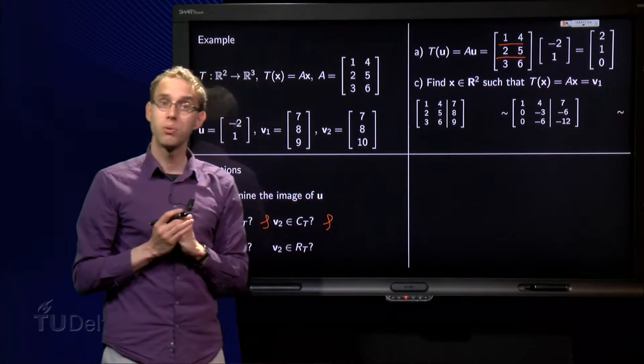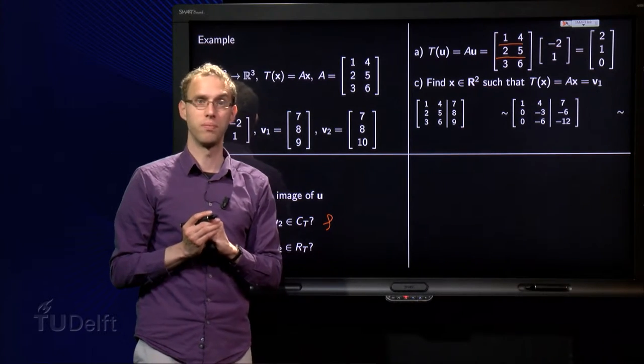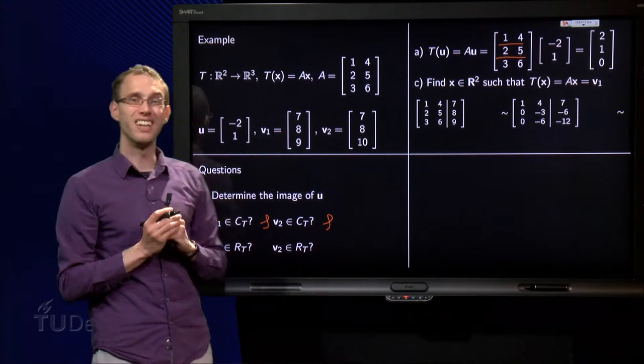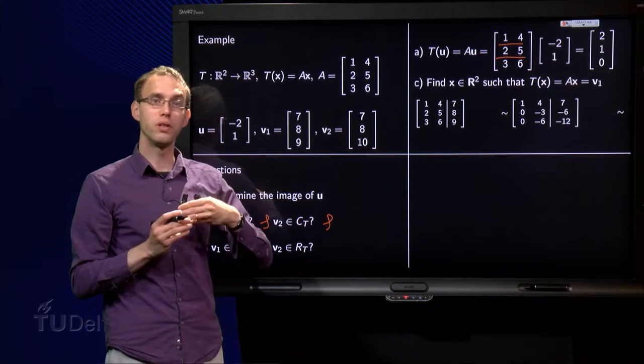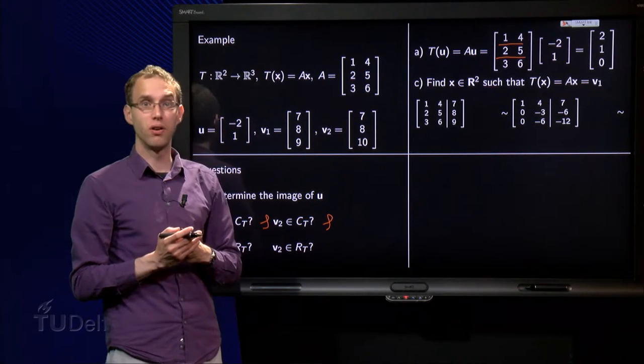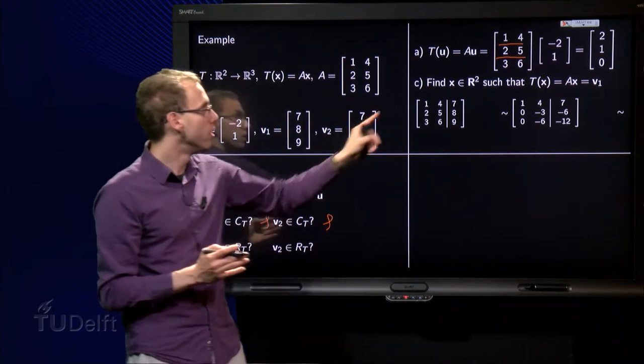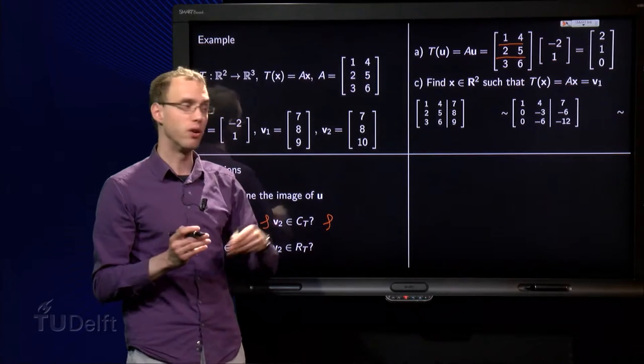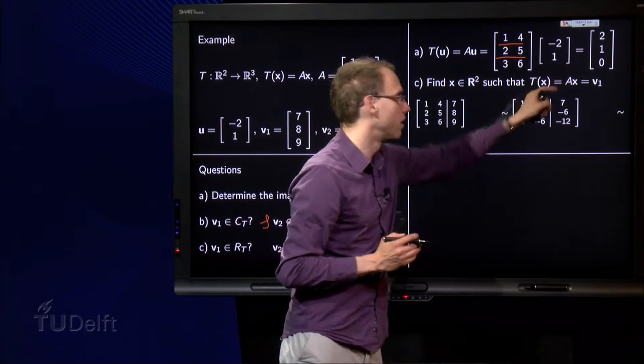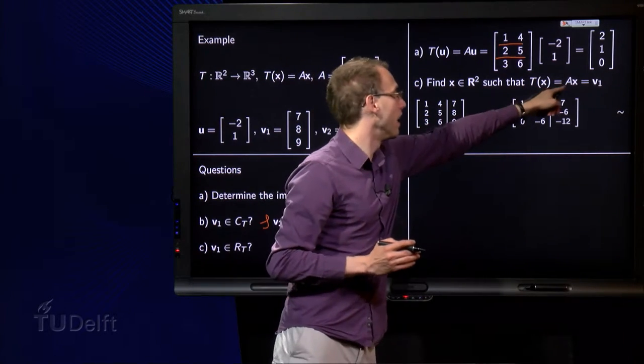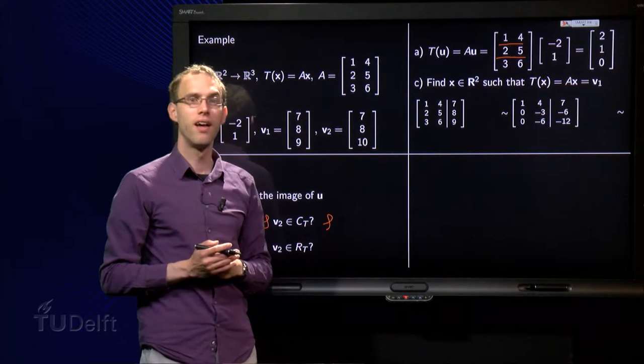Then we go to question C, that one is a bit harder to answer. Is v1 in the range of T? Well, if I want to find out whether v1 is in the range of T or not, we have to find an x in the domain R^2 such that T(x) equals v1. So we have to find an x such that T(x) equals Ax equals v1.